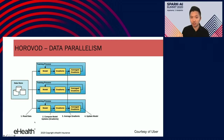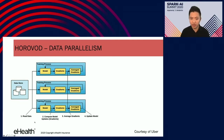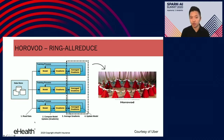Many distributed learning systems, such as TensorFlow, have implemented the parameter server approach. However, when many nodes communicate to one node, that particular machine quickly becomes a bottleneck due to network communication costs. As the number of nodes increases, the complexity of such a system also increases dramatically. Instead, Horovod uses what is called the ring-allreduce approach.